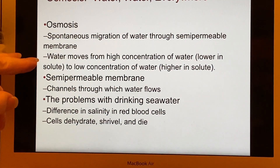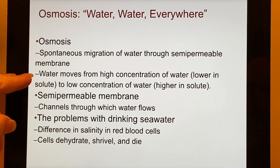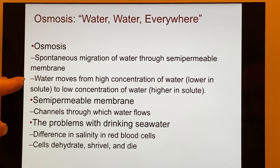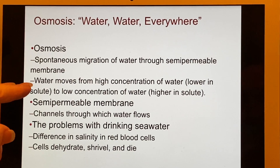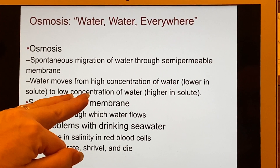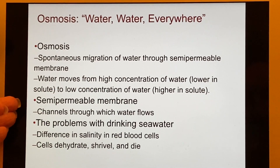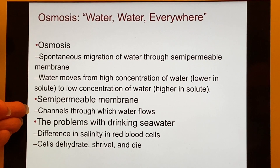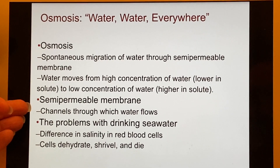If the water is able to go through the membrane and the solute is not, then the water is going to go where there's less water — it's going to try to balance things out. The semi-permeable membrane allows water to go through because it has small enough channels or holes that water can pass through.